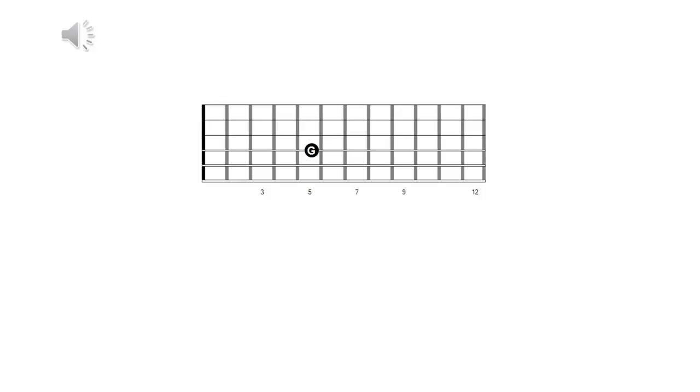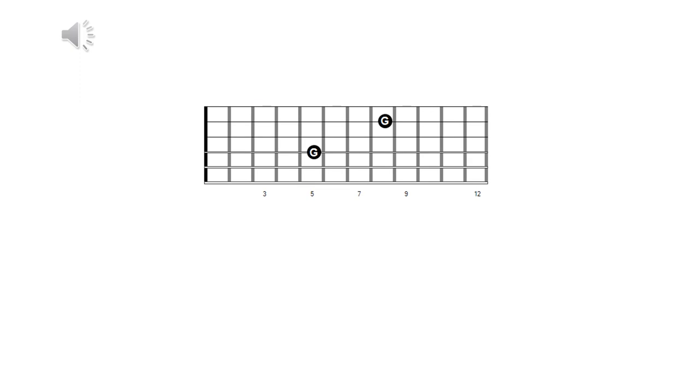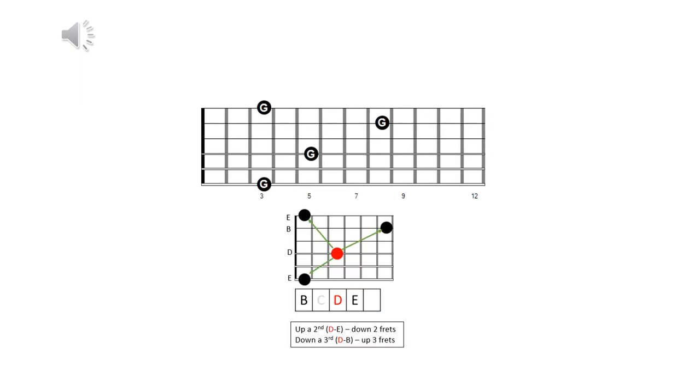Now, let's put our shortcuts to the test. Take a look at the G note on the fifth fret of the D string. What should our thought process be if we wish to determine the identical root on a higher and lower fret? First, we must remember that the roots in any shape are either two or three frets apart. Next, we must ascend and descend alphabetically from the letter D, our current string location. As D to E is an ascending second, we will find the identical root two frets lower on the E string. Since D to B is a descending third, we can arrive at the identical root three frets higher on the B string.